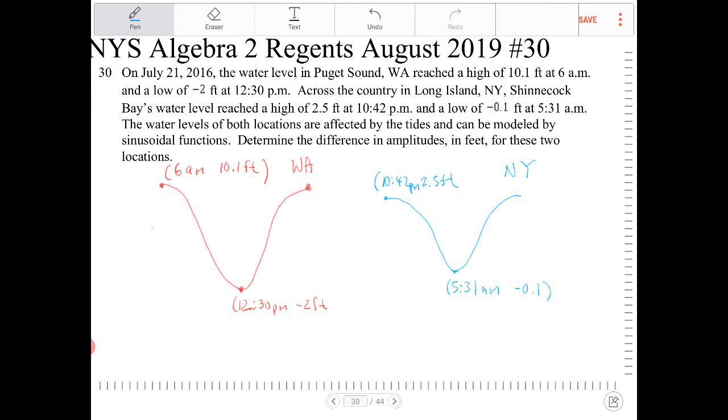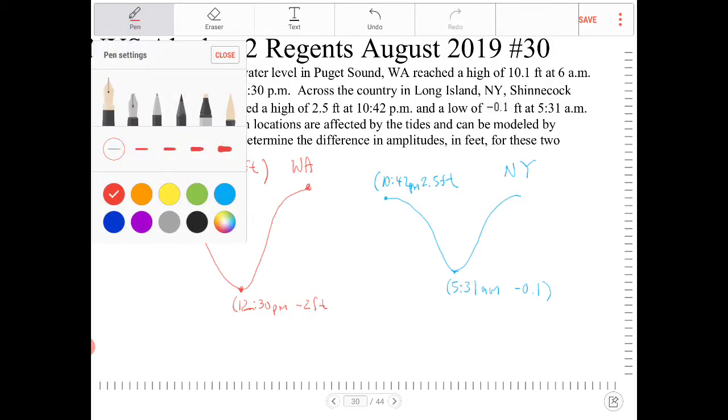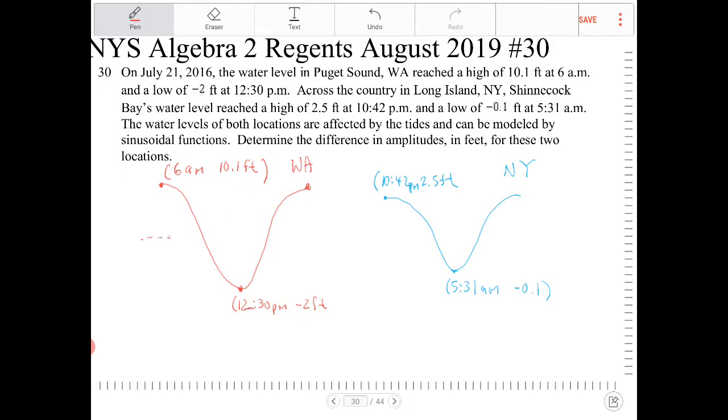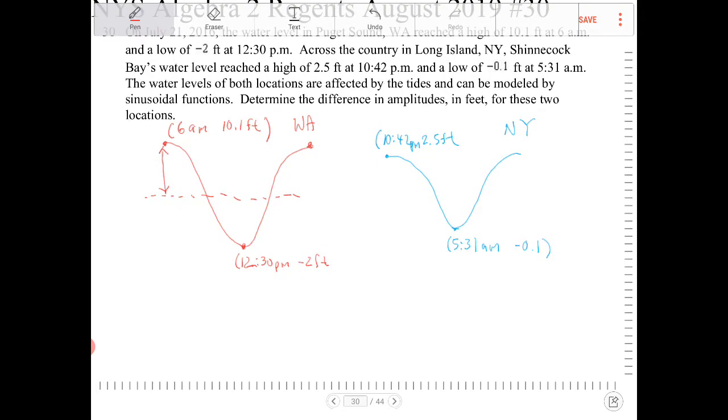So we want to calculate the amplitude values, because that's what they want us to do. The amplitude is the height between the max and the midline. So how are we going to find that out? Well, all you've got to do is take the max and take the min.